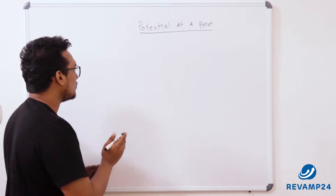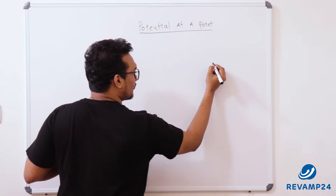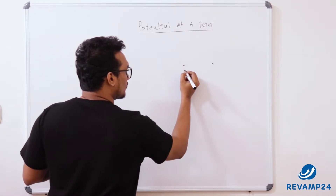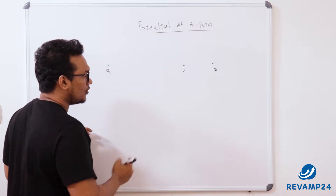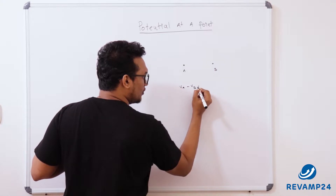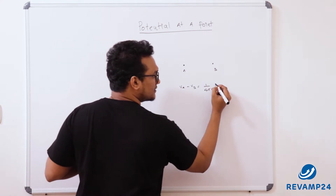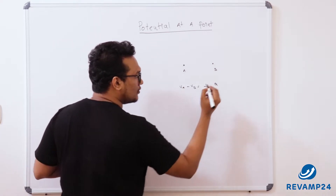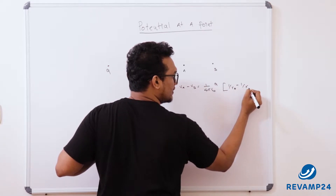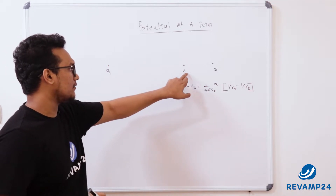How can we find the value? We have a source charge q here, and we are going to find the potential difference between these two positions — this one is a, this one is b. So V_a minus V_b is equal to 1 over 4πε₀ times source charge q times (1/r_a minus 1/r_b). This is the equation we have learned for potential difference between a and b.